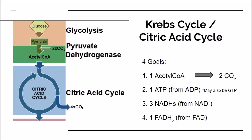The Krebs cycle occurs after glycolysis and after the pyruvate dehydrogenase reaction — that pyruvate oxidation step we discussed in an earlier lecture. What happens is you end up with a molecule of acetyl-CoA. The acetyl-CoA then combines with another molecule called oxaloacetate via a specific enzyme reaction, and it forms citrate.